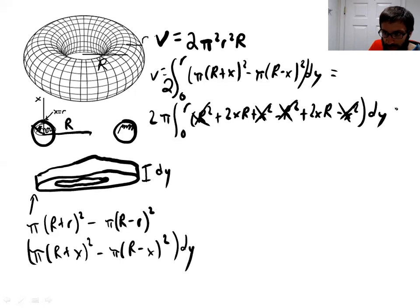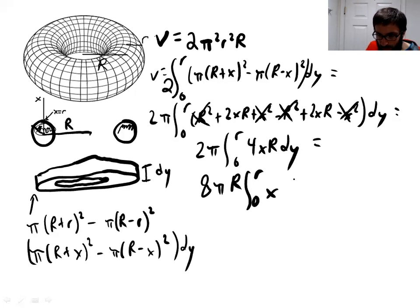We're left with something that's looking a lot simpler now, which is basically 2π times the integral zero to r of 4xR dy. We can furthermore pull out these constants - 4 and R are constants. That's going to get us 8πR from 0 to r of x dy. Now we still have this incongruency here of x and y. So how are we going to relate x and y? That's using the equation of a circle.